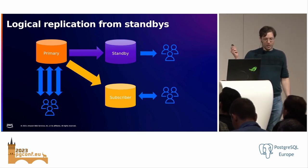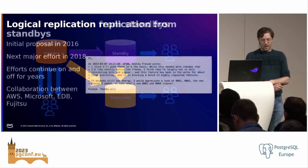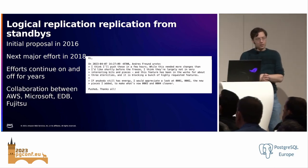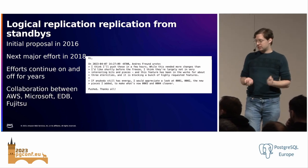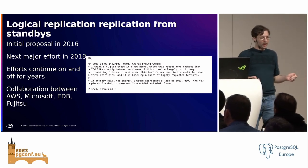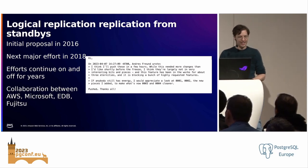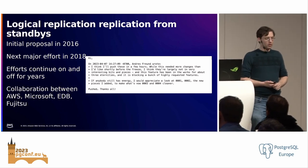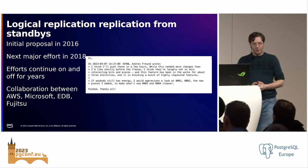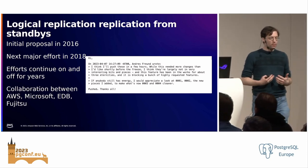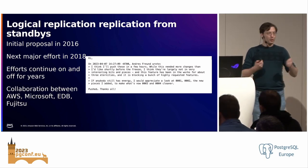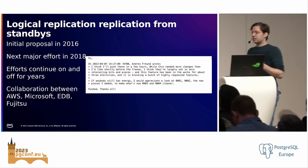This looks simple — I basically moved the arrow from primary to standby — but the initial proposal for logical replication from standby was back in 2016, and this is 2023. It took a multi-year effort because it was a technically hard problem with lots of starts and stops. A huge concerted effort between roughly November 2022 and just before feature freeze in April got this in. Logical replication is a rising-tide-lifts-all-ships feature, and community collaboration made it happen. There's still more work to do, including failover slots to properly support failover when logical replication is involved.